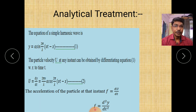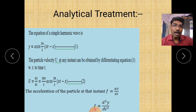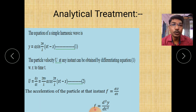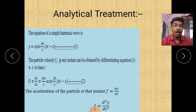Now we have to find the particle velocity. The particle is vibrating along the y direction. Therefore, differentiating equation 1 with respect to time t, we get: u = dy/dt = (2πv/λ) · a cos(2π/λ)(vt − x). This is the velocity of the particle.